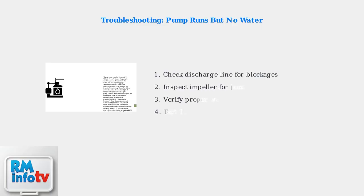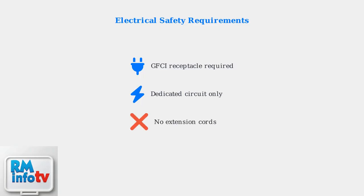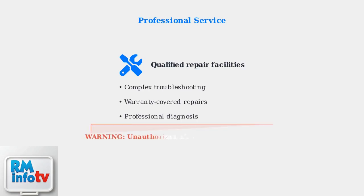If your pump runs but doesn't move water, check for discharge line blockages or a jammed impeller — these are common issues that can often be resolved without professional service. Electrical safety is critical: always connect to a GFCI receptacle and use a dedicated circuit. Never use extension cords, as they can cause voltage drops and safety hazards. For complex problems or warranty concerns, consult qualified repair facilities, as Liberty Pumps recommends professional service — unauthorized disassembly voids the warranty and may cause additional damage.